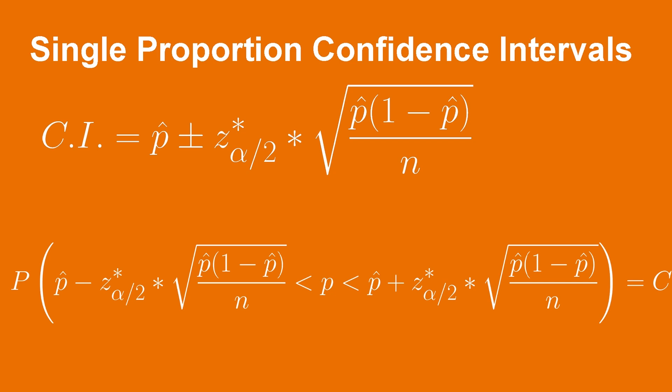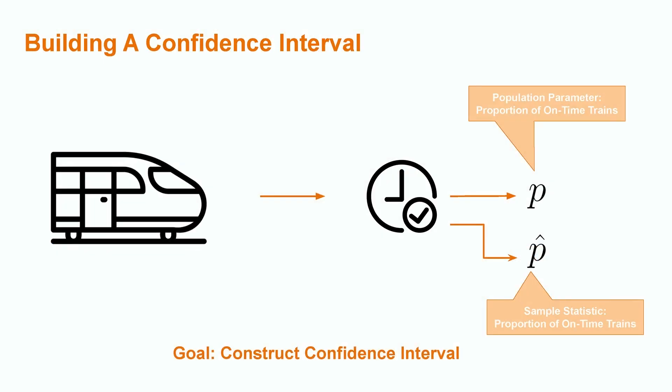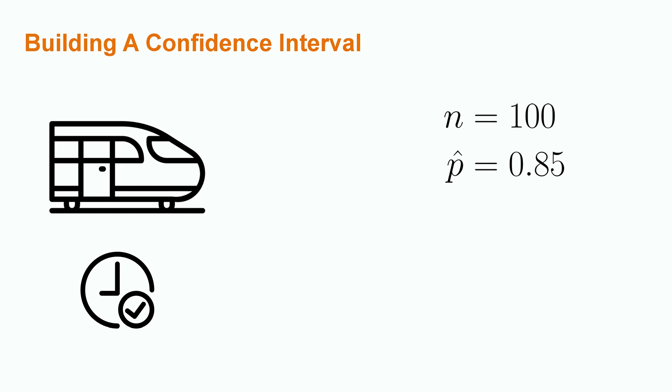Let's see how this works with our train example. Recall that in this example, we are trying to generate a confidence interval on the proportion of on-time trains for some train system. Let's gather some data about this system. Let's say that the train operators monitor 100 trains for a sample size of n equals 100 and observe that 85% of their trains are on time for p hat of 0.85. Additionally, the operator wants to develop a 95% confidence interval so that C1 equals 95% and a 99% confidence interval so that C2 equals 0.99.